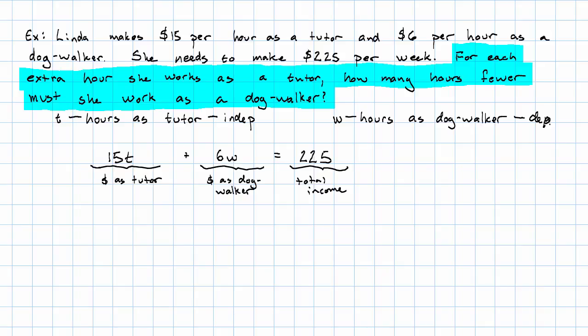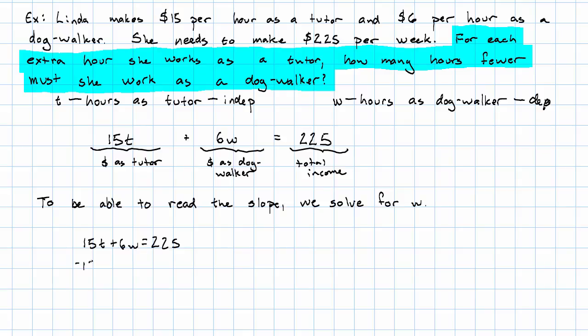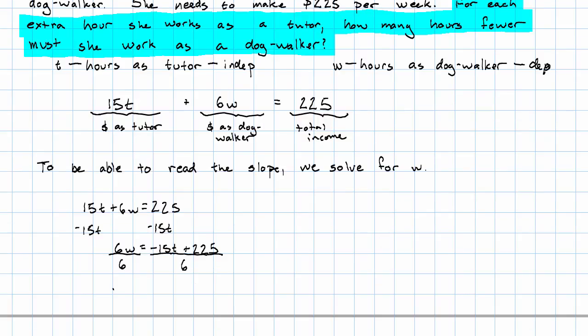To be able to read off the slope, we solve for W. We'll subtract 15T from both sides, and then we'll divide both sides by 6, and we'll get W equals, distributing the division,